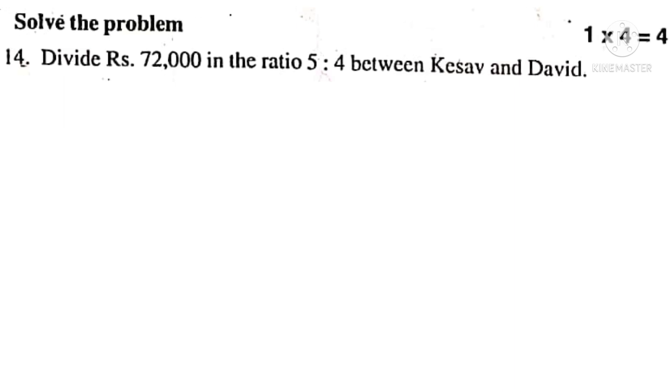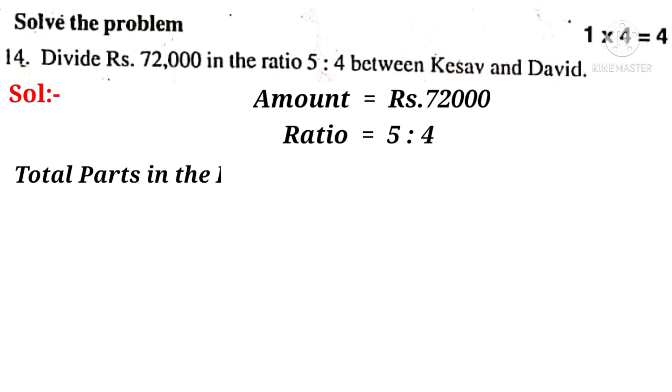Now let us answer 4 more questions. 14th problem. Divide Rs. 72,000 in the ratio of 5 is to 4 between Keshav and David. Solution. Amount given is equal to Rs. 72,000. Given ratio is equal to 5 is to 4. Now total parts of the given ratio is equal to 5 plus 4 which is equal to 9.